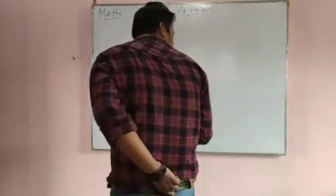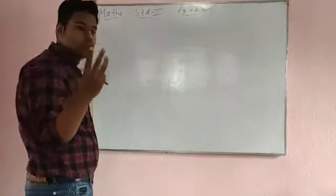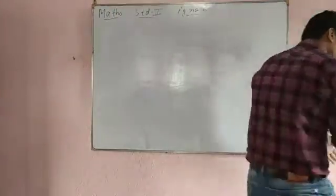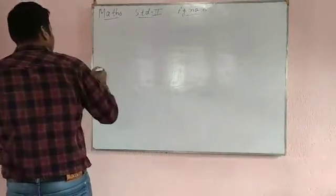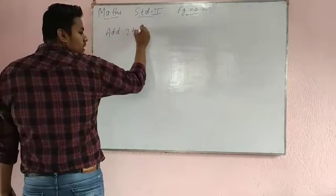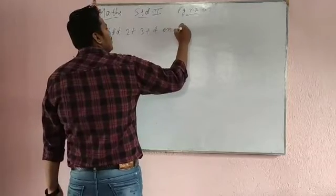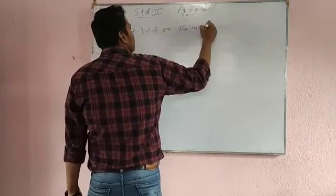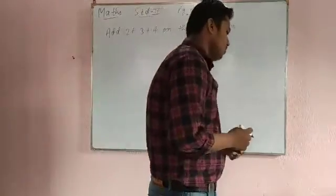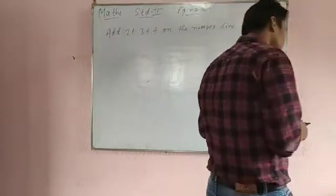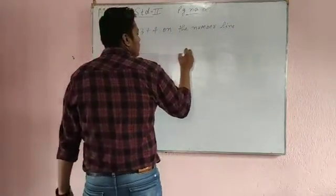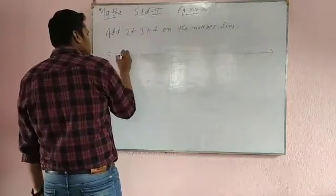See, question is, now you have to add three numbers on the number line. Add two plus three plus four on the number line. You have to add three numbers. See, I am drawing number line for you. You see number line starts always at zero.